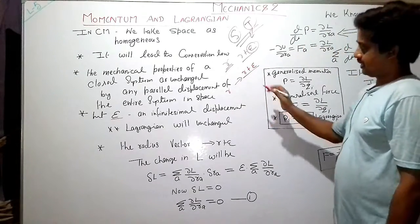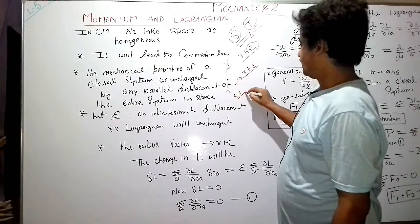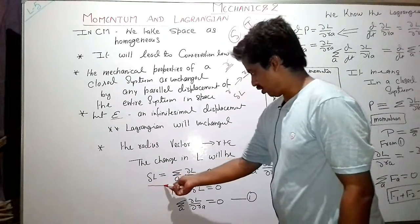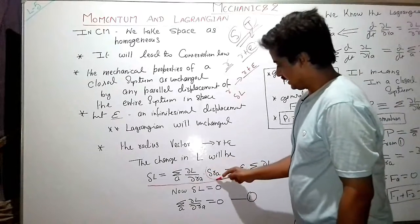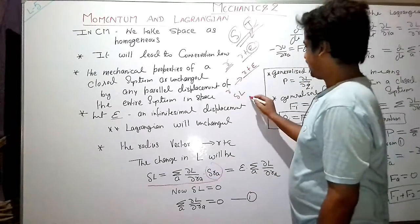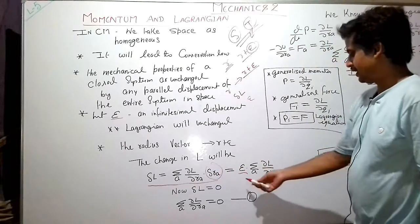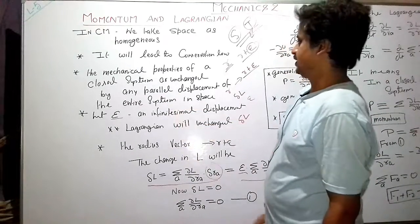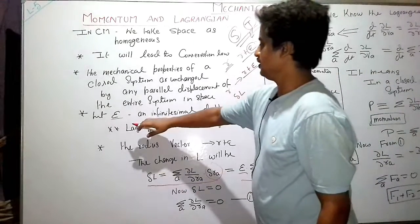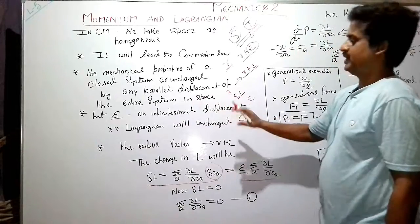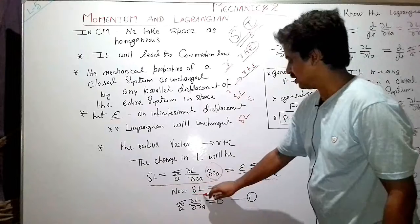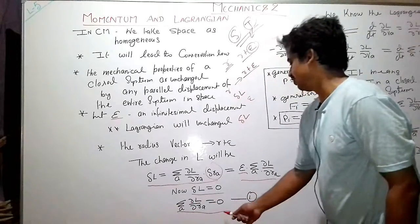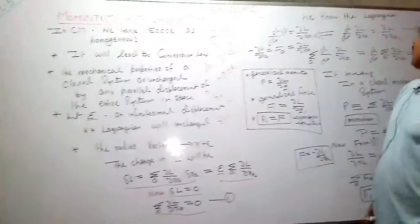We can say that the change in the Lagrangian of that system is (∂L/∂r_a) · δr_a. Here, δr_a is replaced by δ, and since there is no change in the overall Lagrangian when we make a very small displacement, δL = 0. This means the summation of ∂L/∂r_a equals zero. This is our first equation.